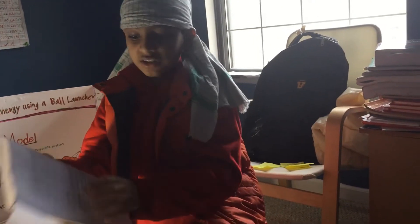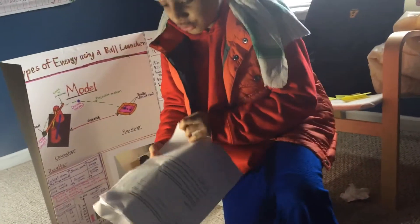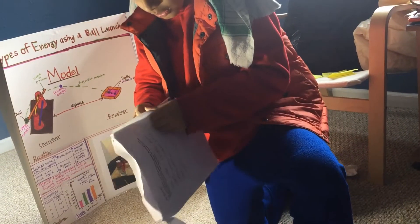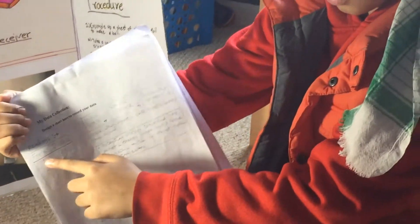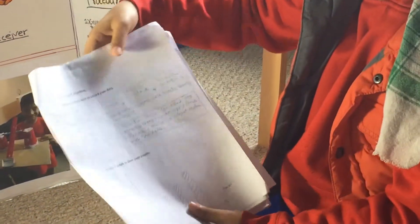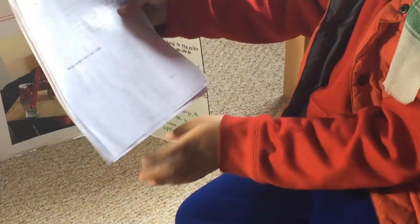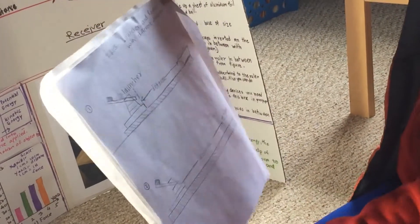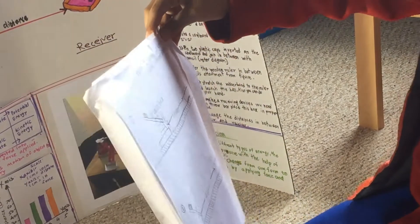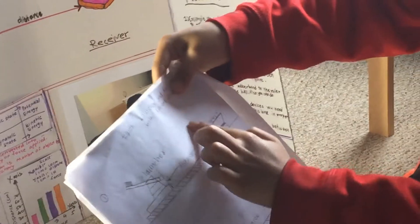You know about my hypothesis, independent and controlled variables, and the materials. Here's my data collection. This is for one of the balls, and this is all the planning for the graphs. This is my two figures — the launcher and receiver — with different distances. Here's the launcher, the distance I throw the ball with force, and it lands into the receiver.